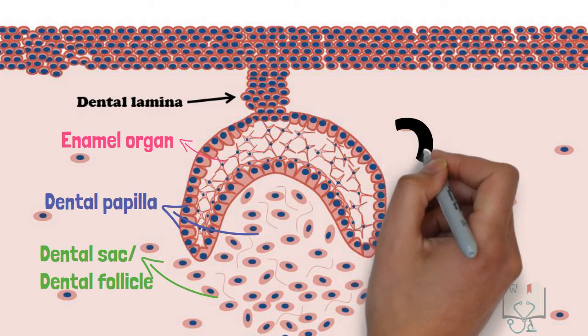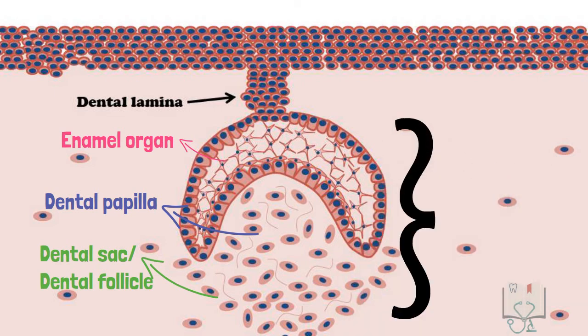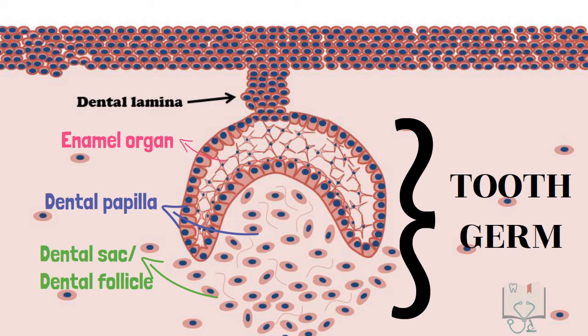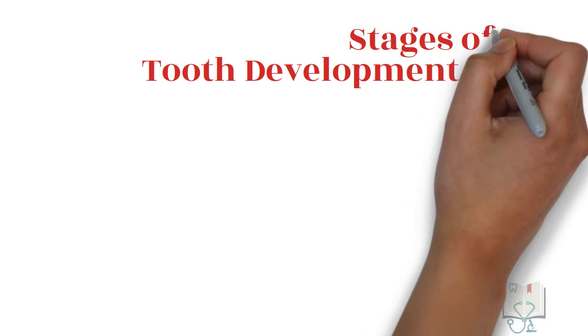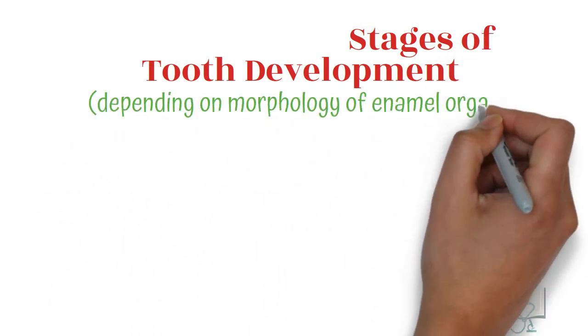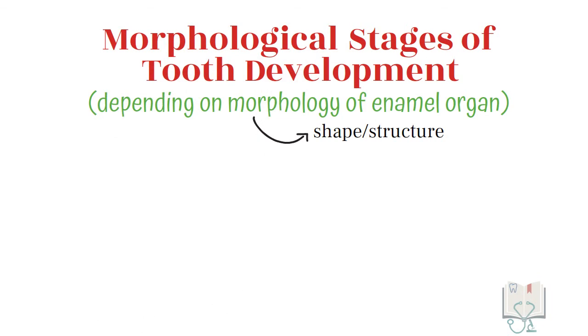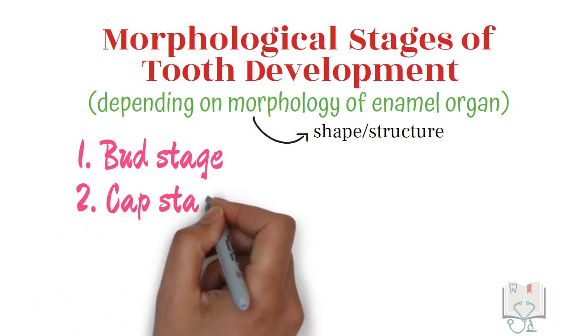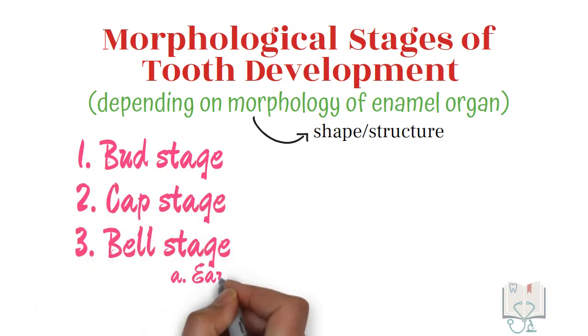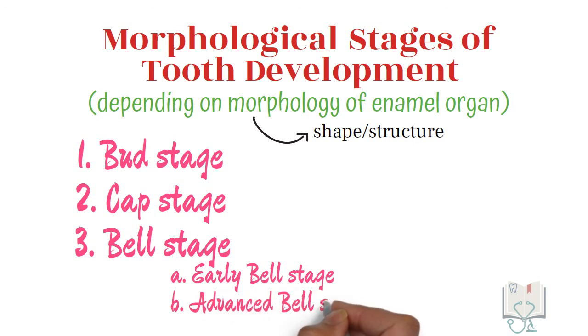All these structures together — the enamel organ, dental papilla, and dental sac — form the tooth germ. A tooth germ passes through similar stages of tooth development for any tooth in the jaw. For better understanding, tooth development has been divided into stages depending on the morphology of the enamel organ as it undergoes changes during development. These are called the morphological stages of tooth development: bud stage, cap stage, and bell stage. The bell stage is further divided into early bell stage and advanced bell stage.